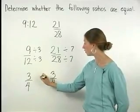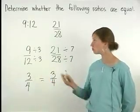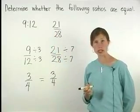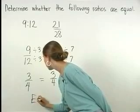Notice that 3 fourths is equal to 3 fourths. So 9 to 12 must be equal to 21 to 28. So our two ratios are equal.